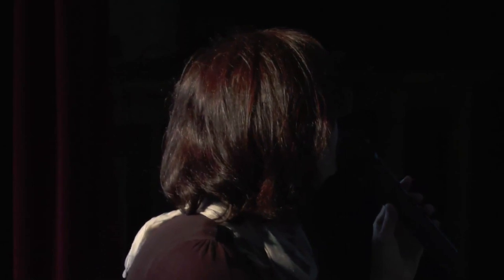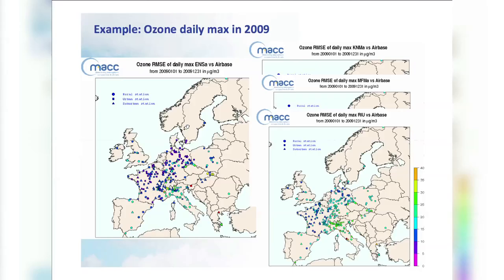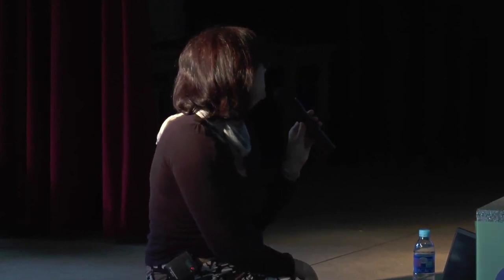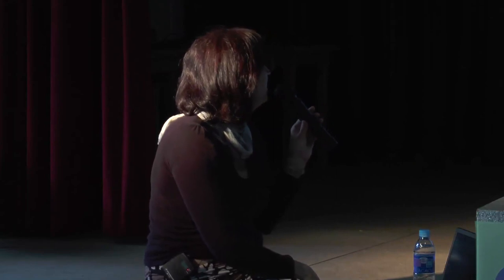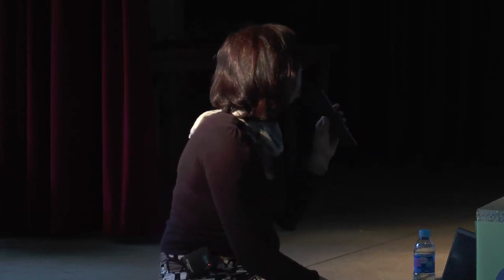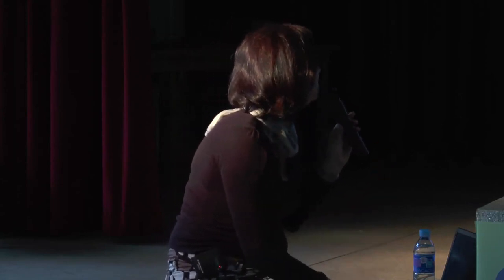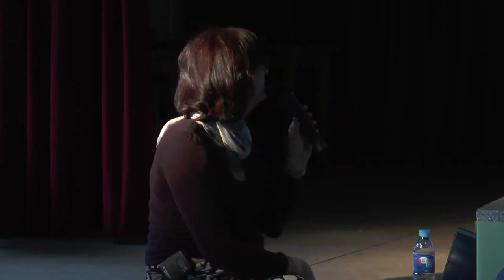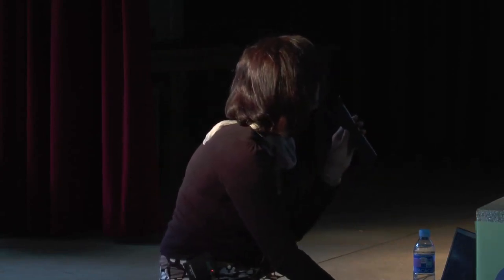Here is the ensemble daily maximum RMSE for 2009. Comparing the ensemble on the left with one of the individual models on the right, you can see generally good agreement, but higher RMSE for the individual model particularly in northern Italy. Another individual model is much closer to what the ensemble provides, but still shows some spots of high error. Each model provides a slightly different picture, and the ensemble captures the best from all these models.